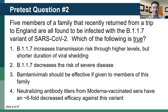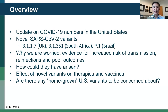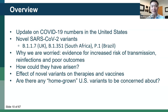Excellent. Here's my overall overview of the presentation. I'm going to start off by giving an update on COVID-19 numbers worldwide and in the US. We'll talk about the rise of novel SARS-CoV-2 variants, especially three that I'm going to focus on: B.1.1.7, which started in the UK; B.1.3.5.1, which arose in South Africa; and P.1, which was first identified in Brazil. We'll talk about why we are worried about these variants, including evidence for increased risk of transmission, reinfections, and poor outcomes, and how these variants could have arisen. We'll cover the effect of novel variants on therapies and vaccines, and whether there are any homegrown US variants we should be concerned about.